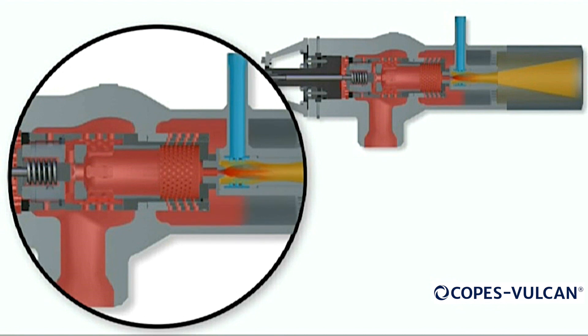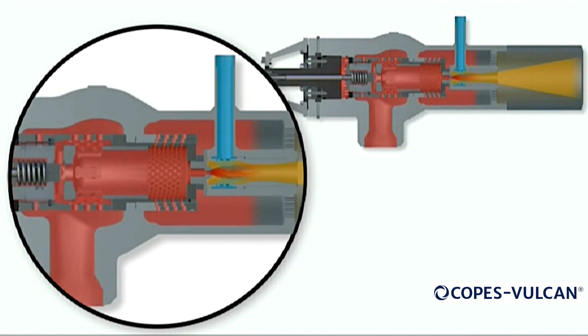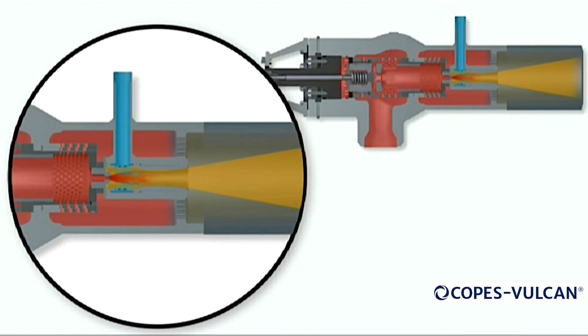The steam pressure in this area is slightly higher than the final downstream pressure. This final pressure drop is taken across the outlet diffuser.